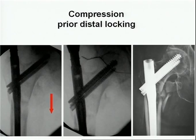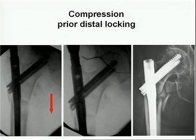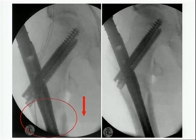We also always perform interfragmentary compression. In nailing, this is no problem: once the proximal fragment is fixed and prior to distal locking, you take a mallet and hammer it onto the jig, compressing this vulnerable area with a high risk of non-union. Even when there is a fracture gap, hammering down before distal locking achieves intraoperative compression in that area.